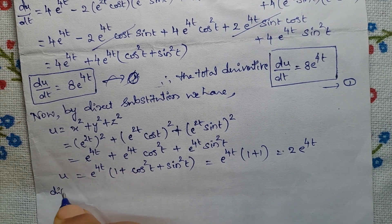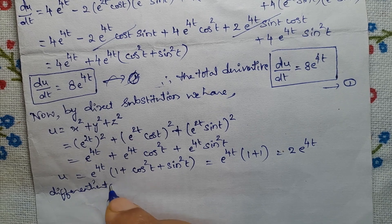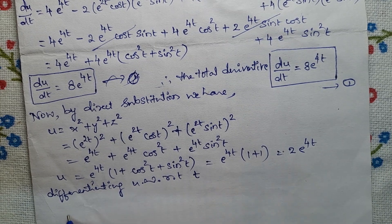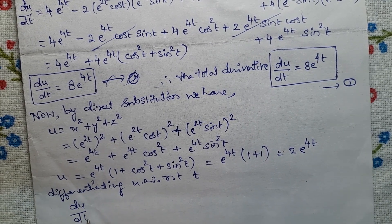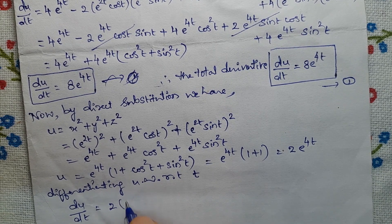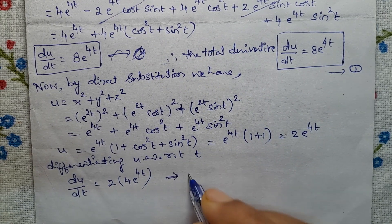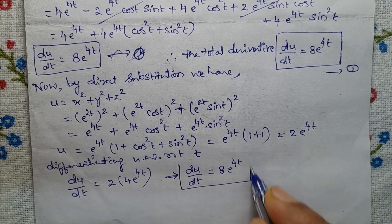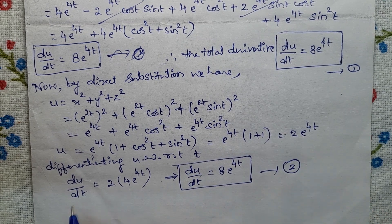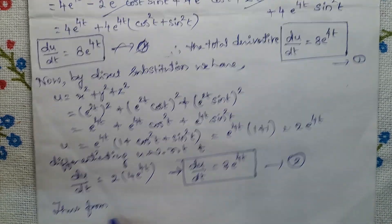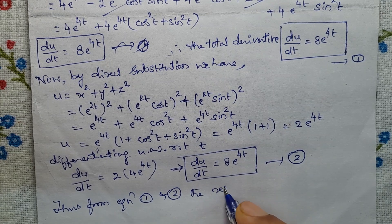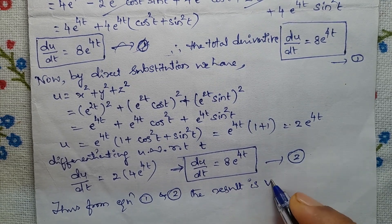Differentiating u with respect to t: du/dt equals 2 · 4e^(4t) equals 8e^(4t). Call it Equation 2. From Equations 1 and 2, the result is verified.